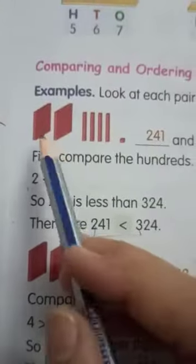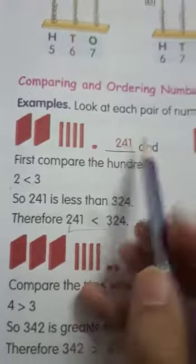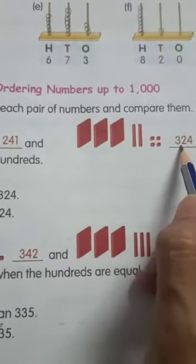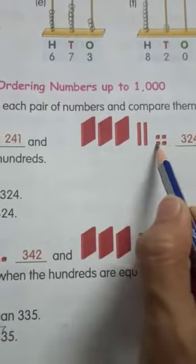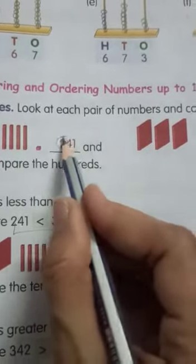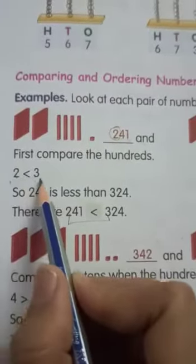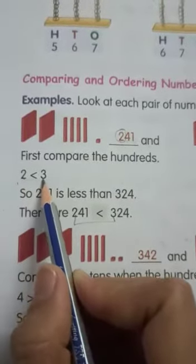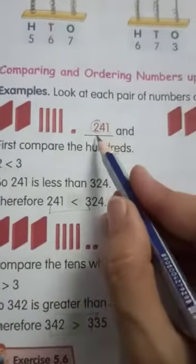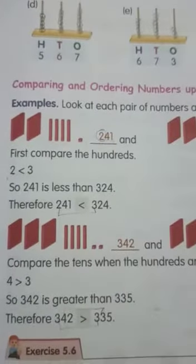Here we have 2 hundreds, 4 tens, and 1 one. And this number has 3 hundreds, 2 tens, and 4 ones. In a 3-digit number, you have to compare the numbers which are on the hundreds place. Here we have 2 and 3 on the hundreds place, and 2 is less than 3. That means 241 is less than 324.